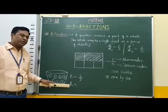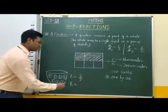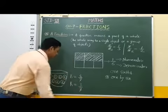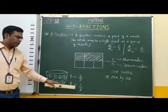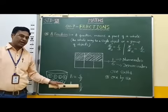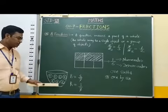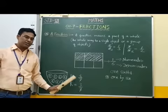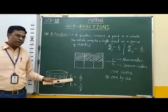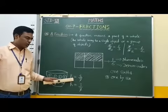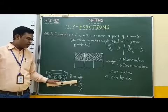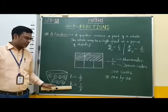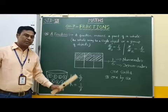The fraction of red color balls is 3 by 7, because there are 3 red balls so the numerator is 3, and total 7 balls so the denominator is 7. Therefore, the fraction of blue color balls is 4 by 7, and the fraction of red color balls is 3 by 7.